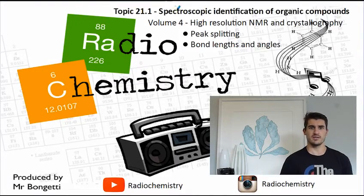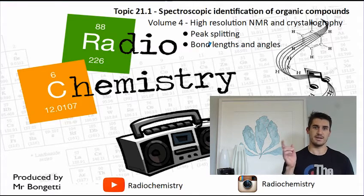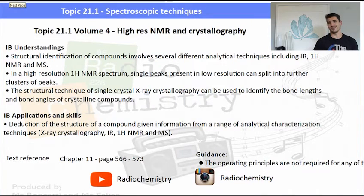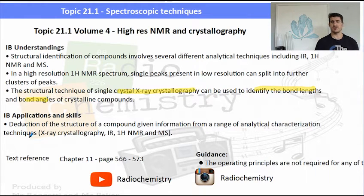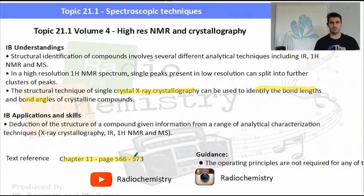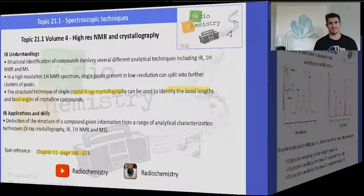Topic 21.1: spectroscopic identification of organic compounds. We look at high-res NMR and crystallography. The most important things are peak splitting and then bond length in crystallography. There are quite a few understandings for this section of the course, so make sure you have a look through those. It's more of the applications and skills that I'm going to be concerned about — how we can use the NMR and the data we can get from it, and the X-ray crystallography. Check out the textbook reference, pages 556–573.